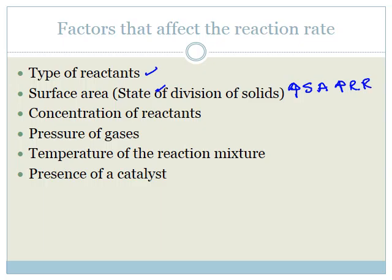The third factor is concentration of reactants. The fourth is pressure of gases, then temperature of the reaction mixture, and finally, the presence of a catalyst. In this lesson, we're going to learn about concentration of reactants and pressure of gases, so please watch these videos carefully to understand how concentration and pressure of gases affects the reaction rate.